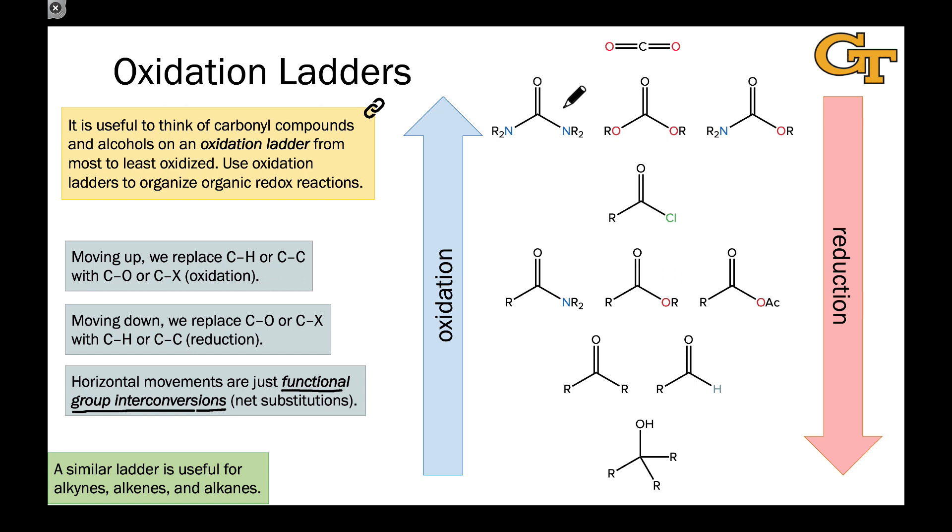For example, converting a urea into a carbonate doesn't change the oxidation number of the carbonyl carbon. It just changes the type of heteroatom connected. So these horizontal transformations in an oxidation ladder are considered functional group interconversions or FGIs. Moving up or down the ladder corresponds to oxidation or reduction. Let's look at this in a little more detail on this oxidation ladder of alcohols and carbonyl compounds that we have here.